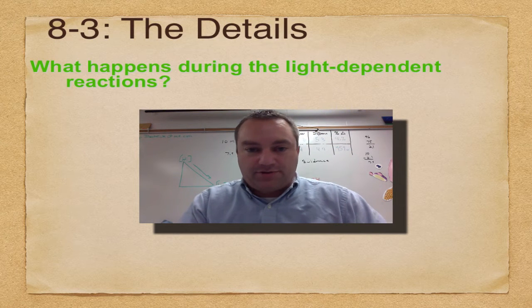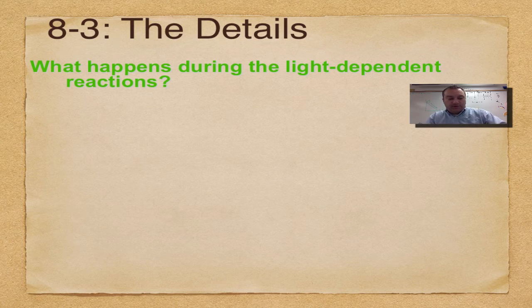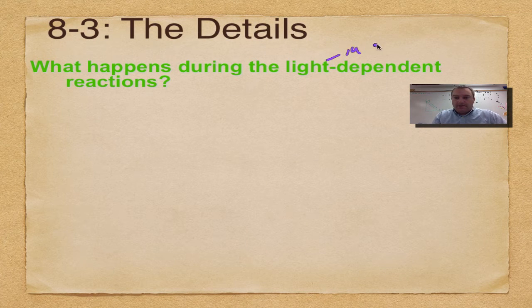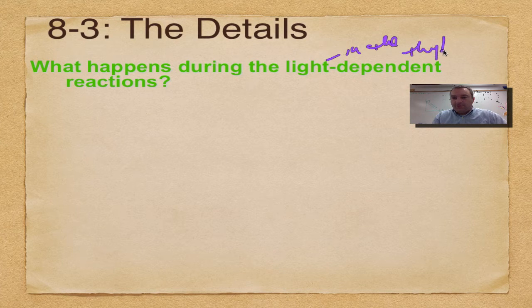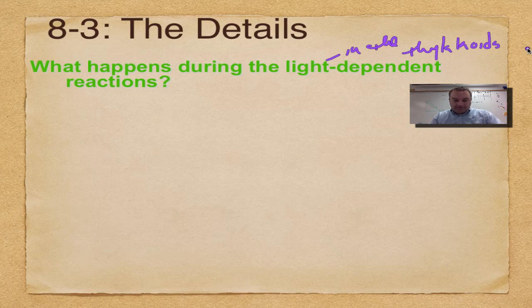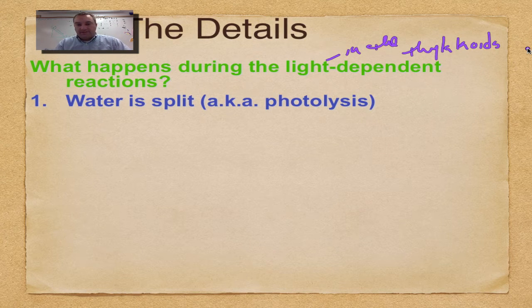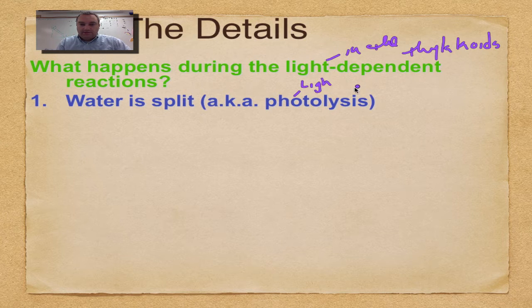So what happens during the light-dependent reactions? The first thing to remember is that they occur in the thylakoids—those little green poker chips you find inside the chloroplast. Light hits chlorophyll, and you have to split water to replace the electron that popped off. That's done through a process called photolysis—using light to break water.